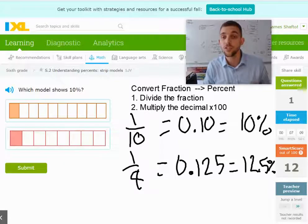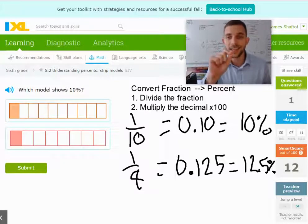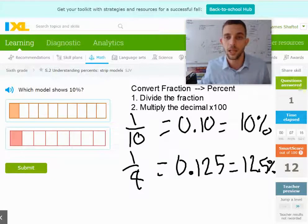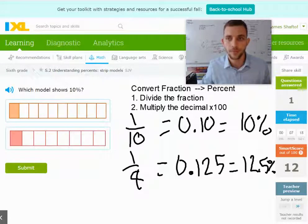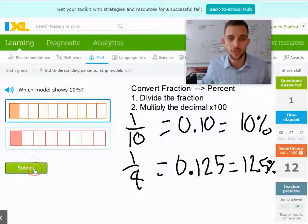You may start to notice a pattern in that the decimal point on the percent is over two from the decimal point on the decimal. In this case, the correct answer is the first one.